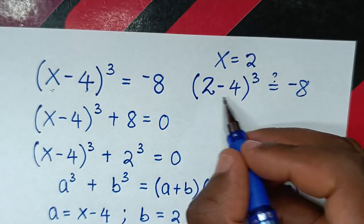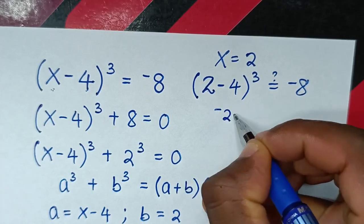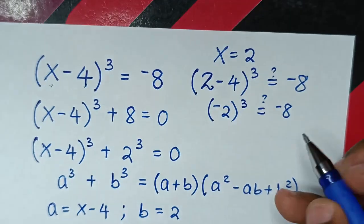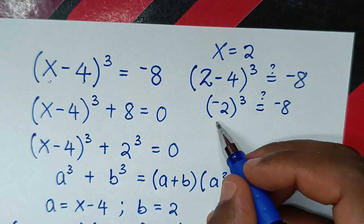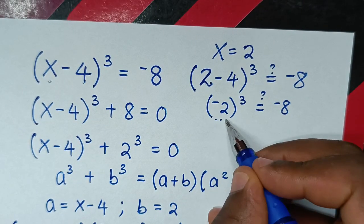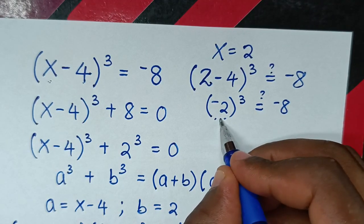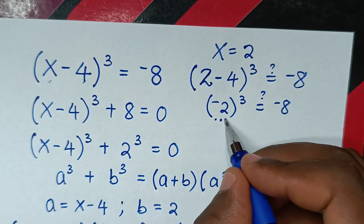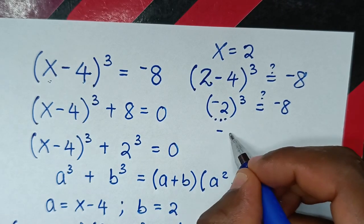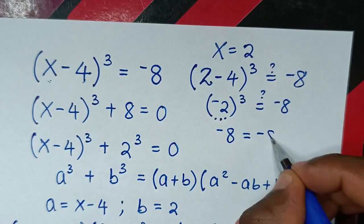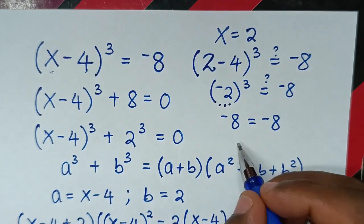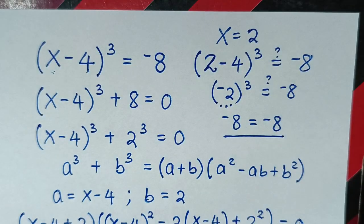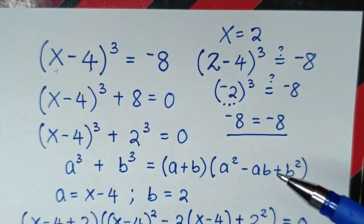2 - 4 = -2, so (-2)³ = (-2) × (-2) × (-2) = 4 × (-2) = -8. The left side equals the right side, so x = 2 is confirmed correct. The complex solutions are also correct.